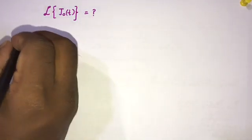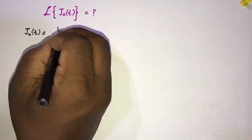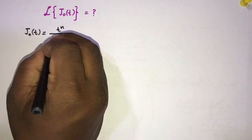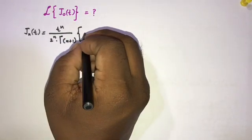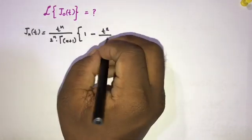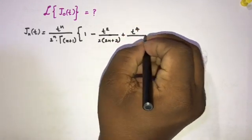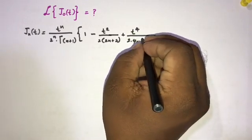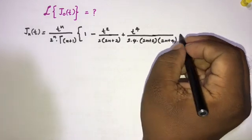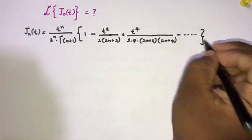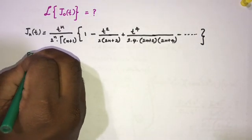The Bessel function of order n is defined as: J_n(t) = (t/2)^n divided by [Gamma(n+1)] times the series: 1 minus t² over [2 · (2n+2)] plus t⁴ over [2 · 4 · (2n+2)(2n+4)] minus and so on.